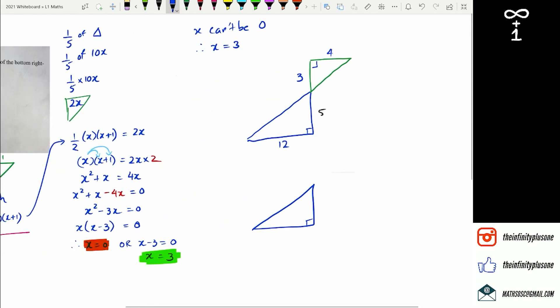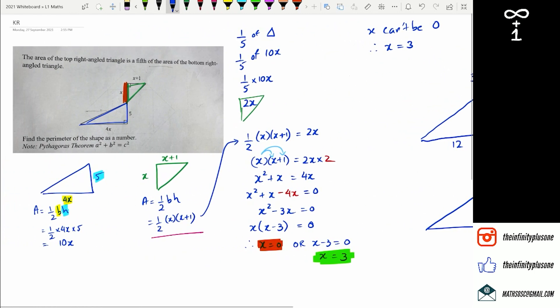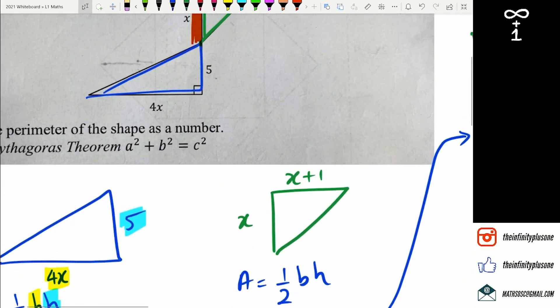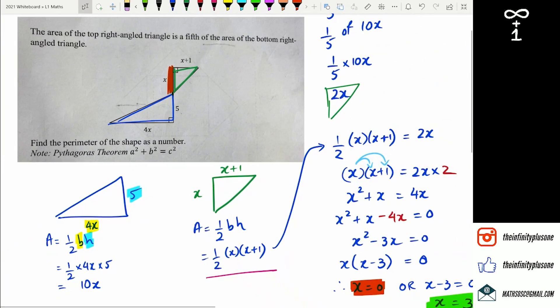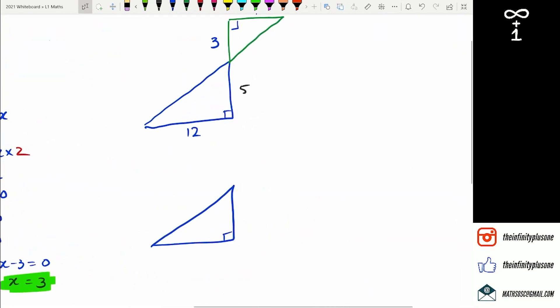They do give you guys the equation of the Pythagorean theorem. So they actually say that it's a squared plus b squared equals c squared. So we've got to work that out here. We've got 12 and 5. And here we've got the hypotenuse. So h squared equals 5 squared plus 12 squared.